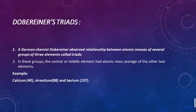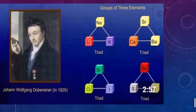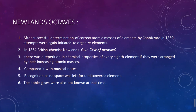In the visual representation, the triads are shown as triangles. The element whose average atomic mass we want to find sits at the top, with the other two at the base. For lithium-sodium-potassium we get sodium's mass; for calcium-strontium-barium we get strontium's mass; and for chlorine-bromine-iodine we get bromine's average atomic mass according to the triads.